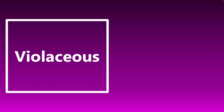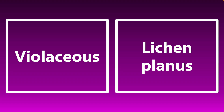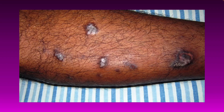If you see violaceous papules or a similar description, think lichen planus. Remember, lichen planus is associated with the 5Ps or 6Ps depending on your resources: purple, polygonal, planar, pruritic, papules, or plaques. Here is your visual stimulus — you can see them: they're purple, pruritic, somewhat polygonal in shape, and either papules or plaques. Be sure you know all of these high-yield buzzwords and images for lichen planus.